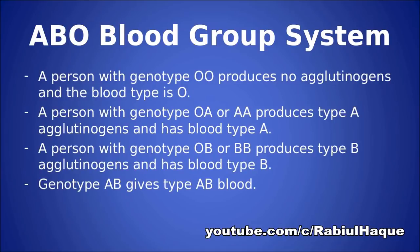A person with genotype OO produces no agglutinogen and that's why the blood type is O. A person with genotype OA or AA produces type A agglutinogen and the blood type is A. Similarly, a person with genotype OB or BB produces type B agglutinogen and has blood type B, and genotype AB gives type AB blood group.